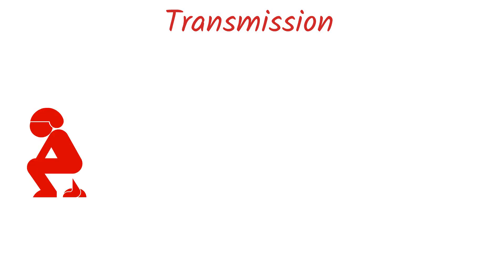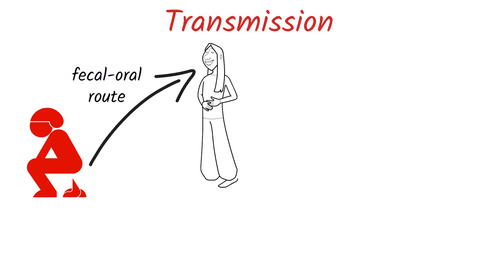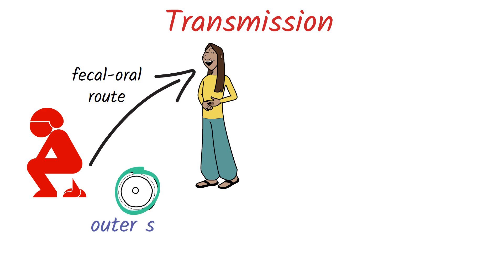Now let's talk about its mode of transmission. Crypto is passed in the stool of an infected person or animal. Cryptosporidiosis spreads through the fecal-oral route, which means one can get infected by accidentally swallowing feces that has parasites in it. The parasite is protected by an outer shell that allows it to survive outside the body for a longer period of time and is highly resistant to chlorine.